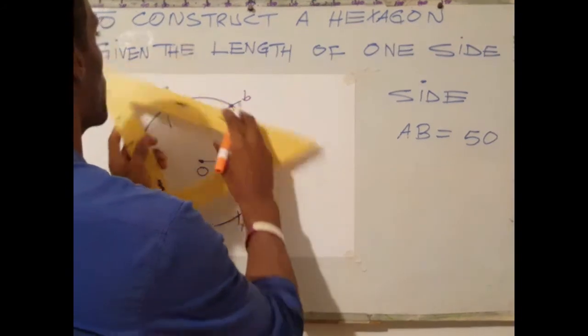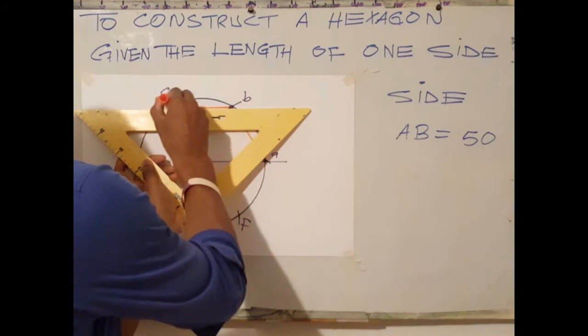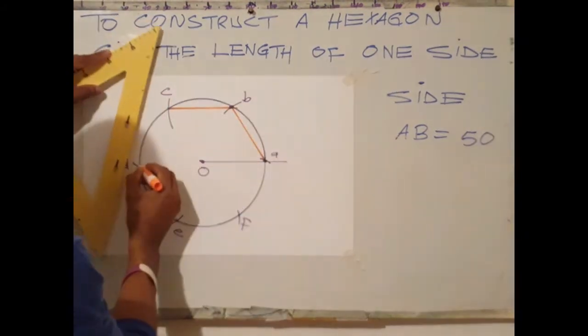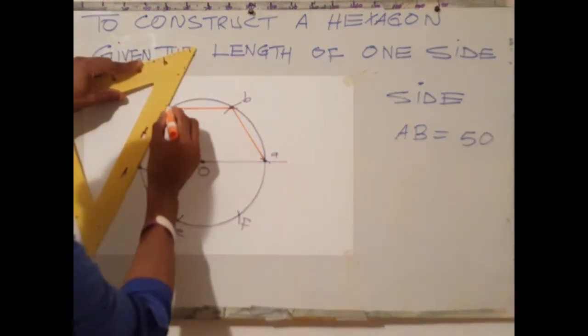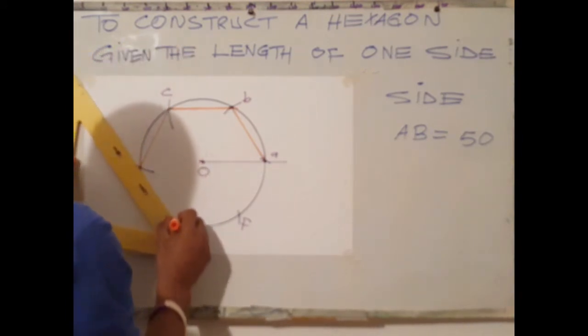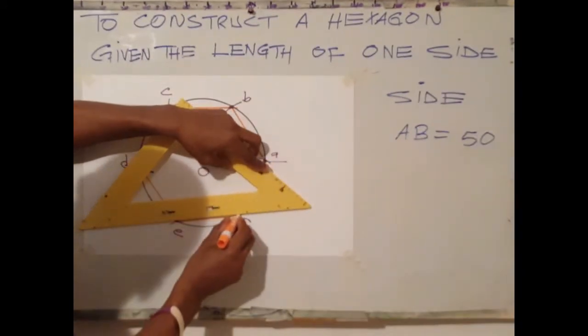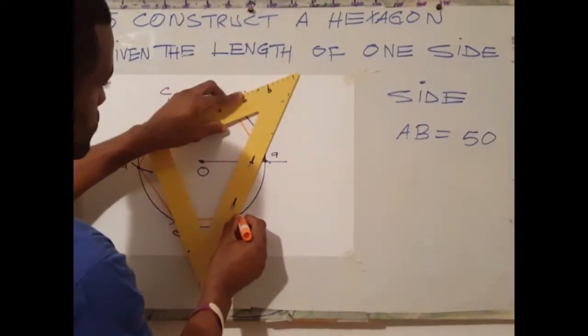All the way around. A to B, B to C, C to D, D to E, E to F, F back to A.